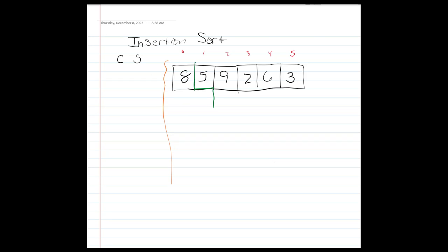That first element to the right of the sorted portion is five. We take five and move it into its proper position by doing comparisons and swaps. We compare five to eight, and since five is less than eight, we do a swap. That's one comparison and one swap, giving us five and eight.